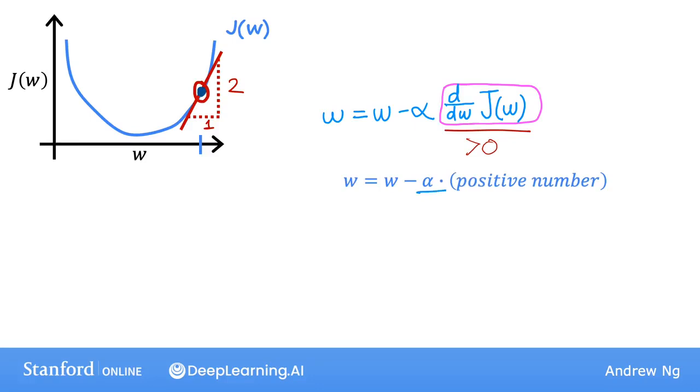The learning rate is always a positive number. So if you take w minus a positive number, you end up with a new value for w that is smaller. So on the graph, you are moving to the left. You're decreasing the value of w.